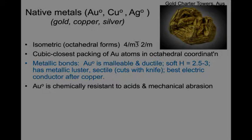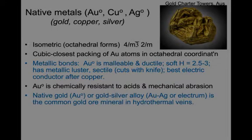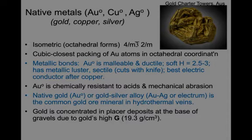Gold is chemically resistant to acids and mechanical abrasion, and it forms usually as native gold or gold-silver alloys as hydrothermal ores in veins. Gold is concentrated in placer deposits at the base of gravels due to gold's high specific gravity of 19.3 grams per cubic centimeter.